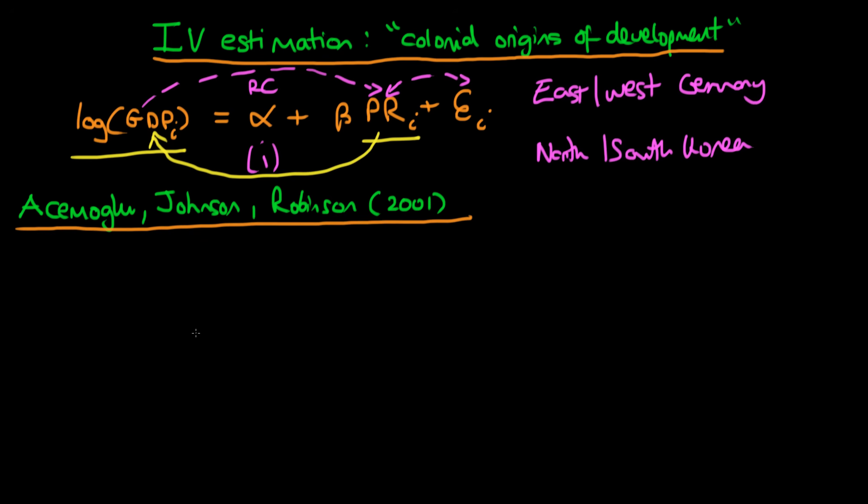The paper which I'm going to be looking at is by Acemoglu, Johnson and Robinson in 2001, who were concerned with how property rights affect GDP. Their idea was that the settlement strategy which a colonialist chose to undertake in a given country would lead to differences in the type of early institution installed in that country.